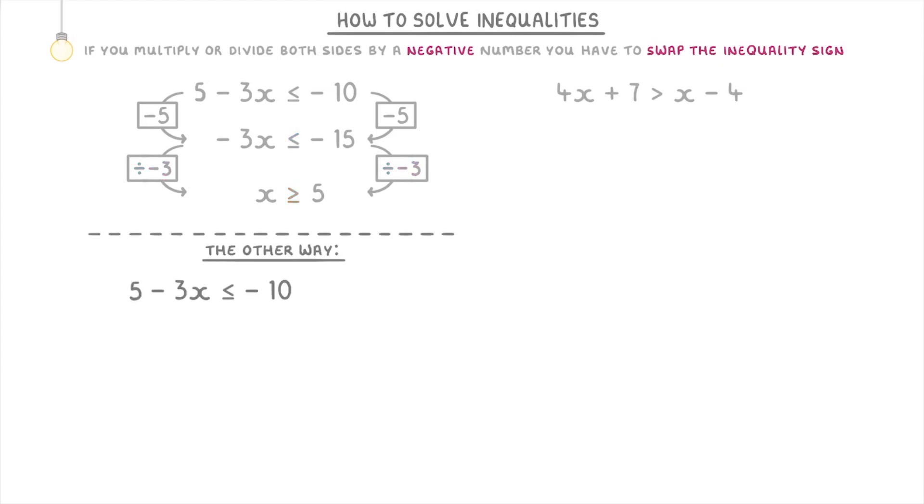The second way that we could have done this question would be to add 3x to both sides to get 5 is less than or equal to -10 + 3x, then add 10 to both sides to get 15 is less than or equal to 3x.